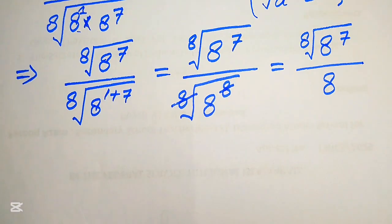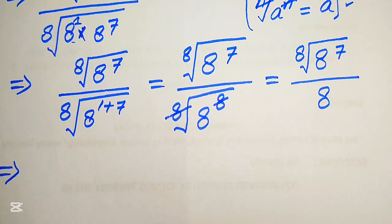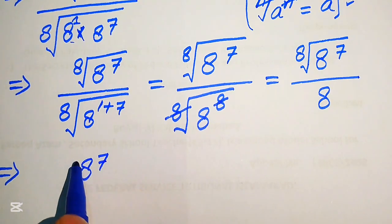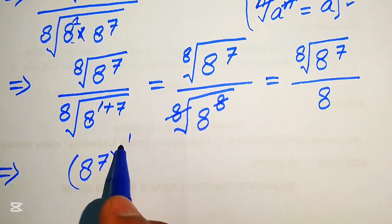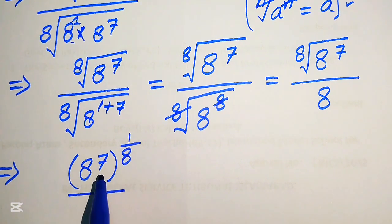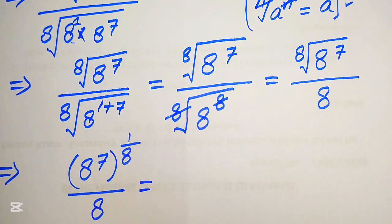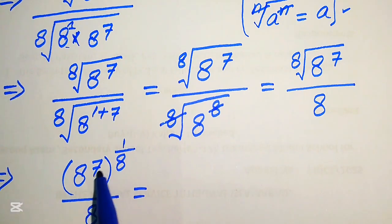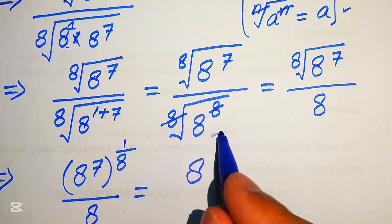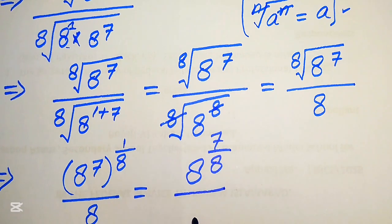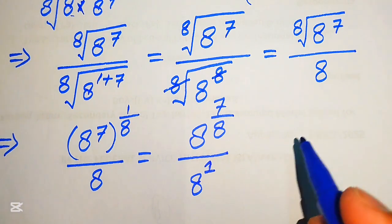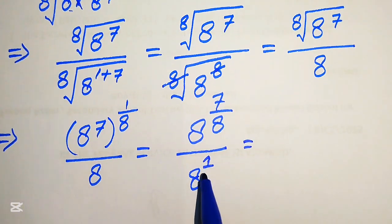We now convert the expression back into exponential form. We write the 8th root of 8 to the power of 7 in exponential form as 8 to the power of 7, raised to the power of 1 over 8, divided by 8. We then apply the exponent law to multiply these two exponents, giving us 8 to the power of 7 over 8, divided by 8.